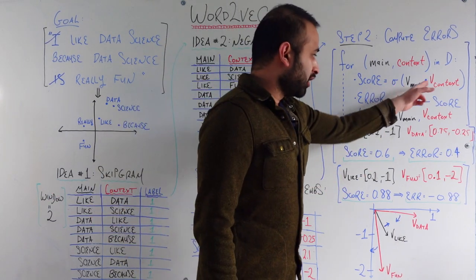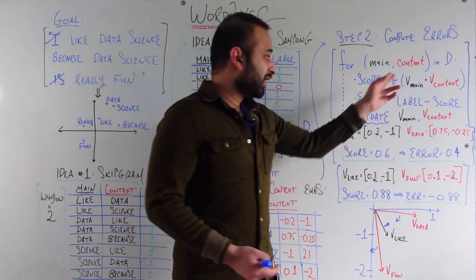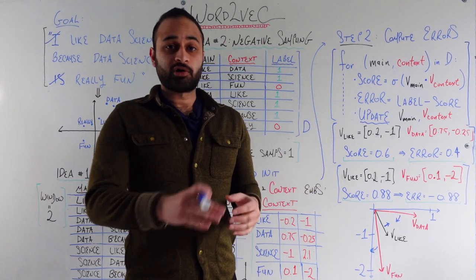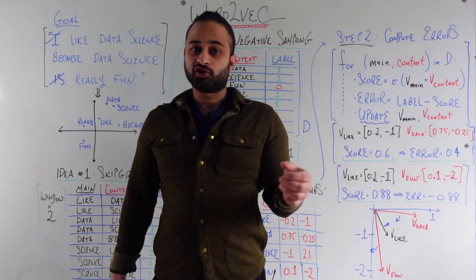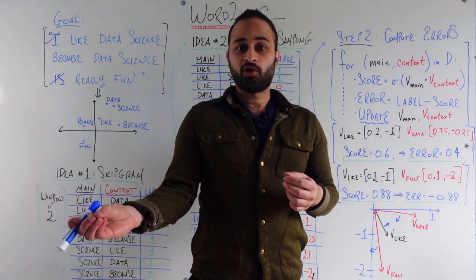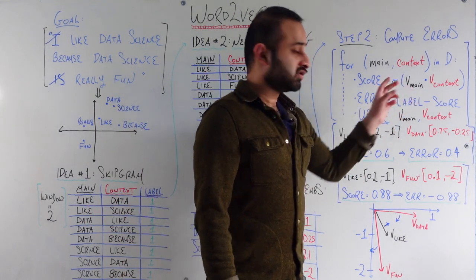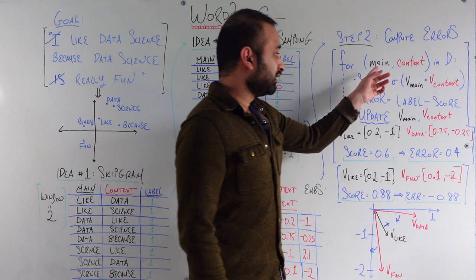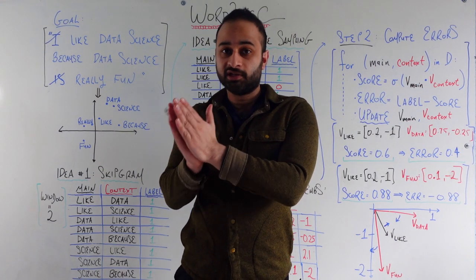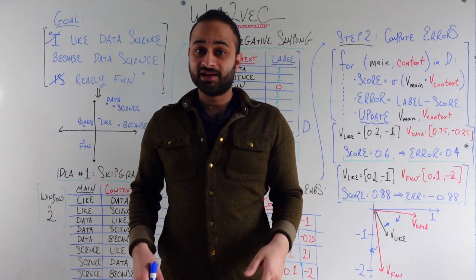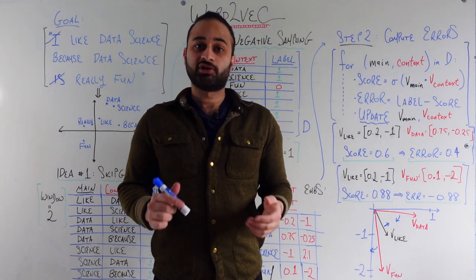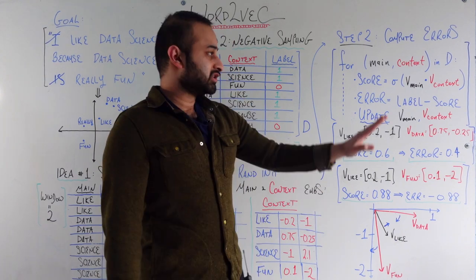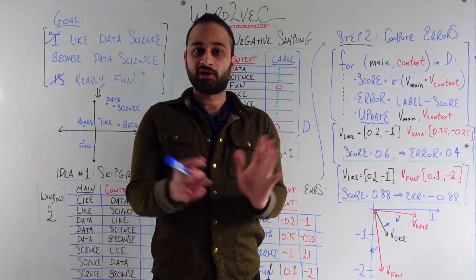The score is calculated as the dot product between the main vector and the context vector, and then you run that result through a sigmoid. If the dot product is very large, that means the main vector and context vector are close together in space, which causes a large dot product. A large number put into a sigmoid gives something very close to one — since the sigmoid squashes things between zero and one. So a score close to one indicates that the main and context vectors are close together. Conversely, if the dot product is very negative, the vectors are facing in opposite directions and are not similar. A very negative input to a sigmoid gives something close to zero, so a score near zero tells us these vectors are not very similar.